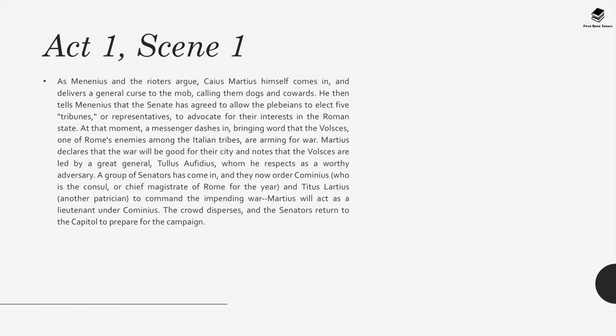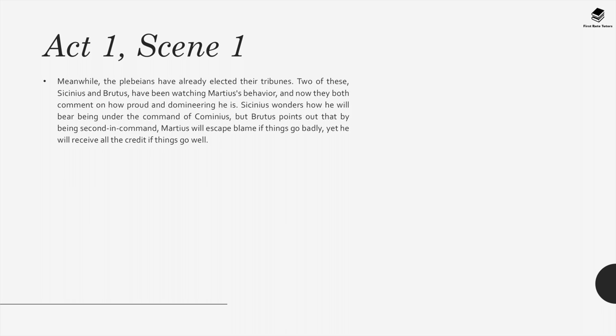A group of senators orders Cominius, the consul or chief magistrate of Rome, and Titus Lartius, another patrician, to command the impending war. Martius will act as a lieutenant under Cominius. The crowd disperses and the senators return to the campaign. Meanwhile, the plebeians have already elected their tribunes. Two of these, Sicinius and Brutus, have been watching Martius's behaviour, and now comment on how proud and domineering he is. Sicinius wonders how he will bear being under the command of Cominius, but Brutus points out that by being second in command, Martius will escape blame if things go badly, yet receive all the credit if things go well.